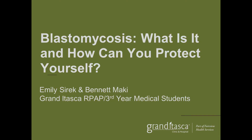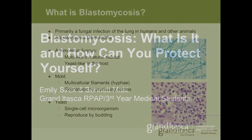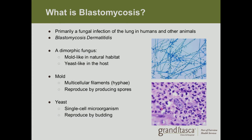We'll be talking about blastomycosis — what it is and how you can protect yourself. Blastomycosis is a fungal infection of the lung in humans and other animals. It is caused by the fungus Blastomyces dermatitidis. It is a dimorphic fungus, meaning that it has two forms. It acts as a mold in its natural habitat out in the environment, and acts as a yeast when it is in the host — either yourself or an animal.